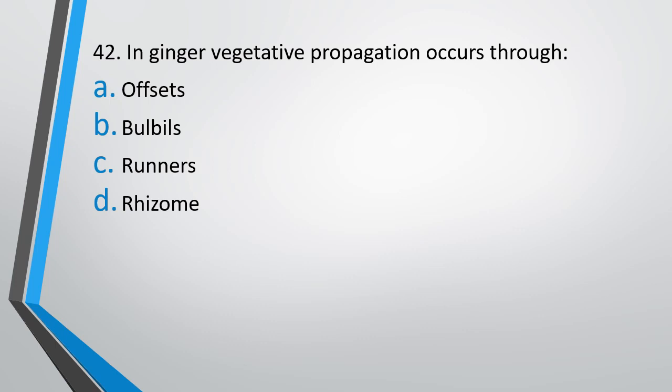Question number 42. In ginger, vegetative propagation occurs through: offsets, bulbils, runners, or rhizome. The correct answer is option D, rhizome.